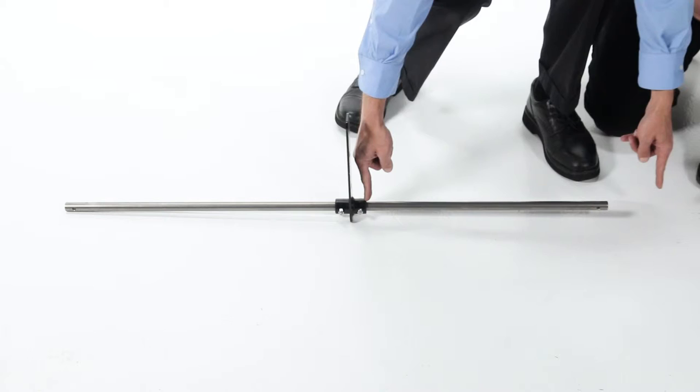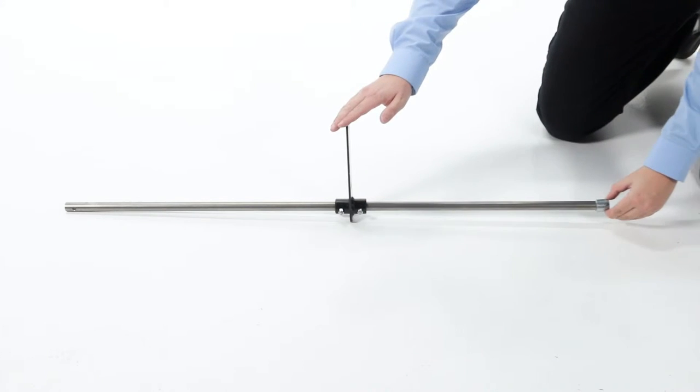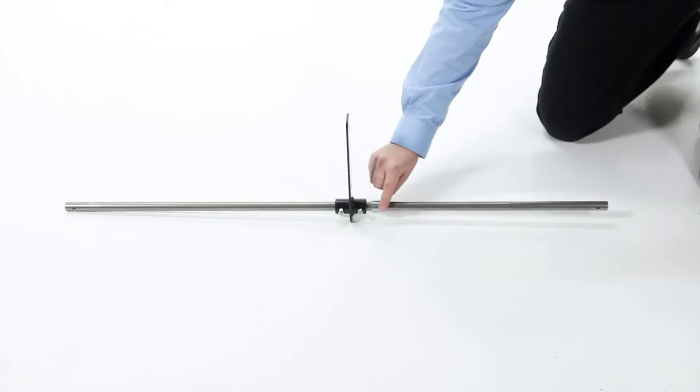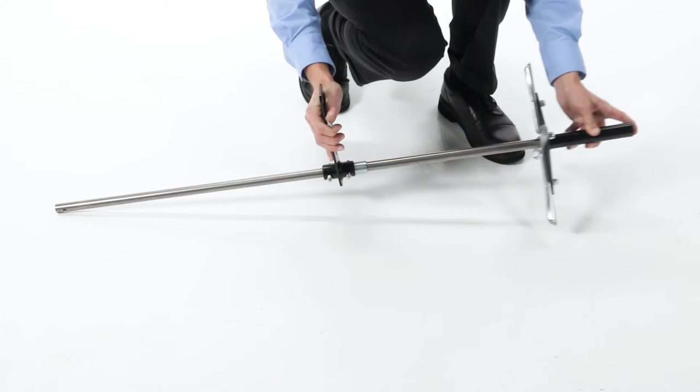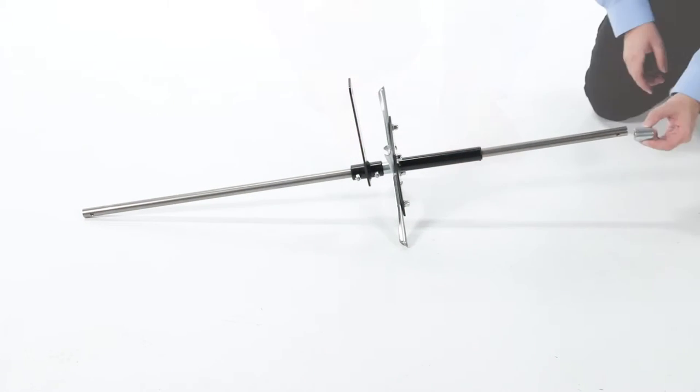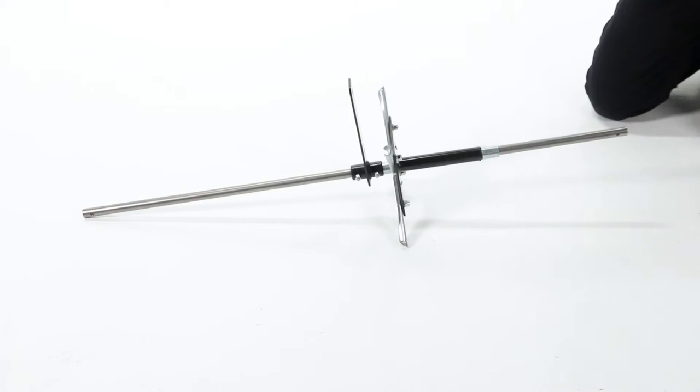Now identify the shorter end of the shaft and slide on a 1 inch spacer part S. Then slide on a single spool assembly part 9 and a 1.33 inch spacer part T.